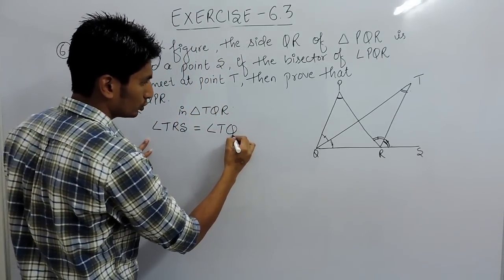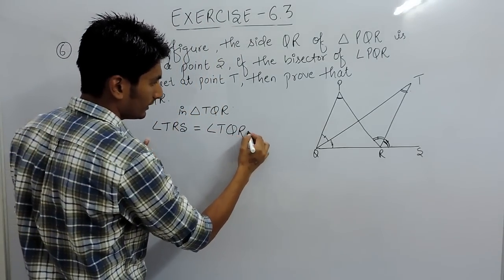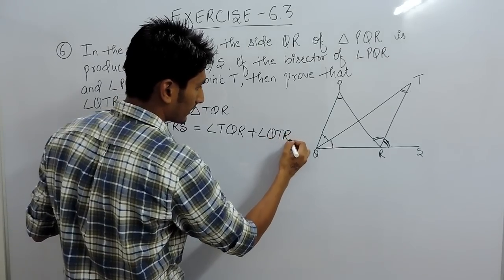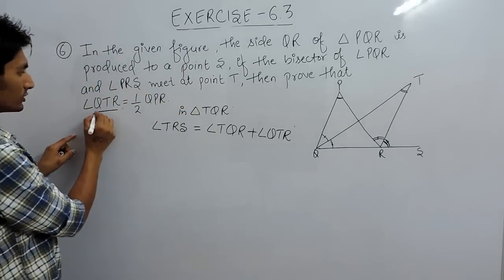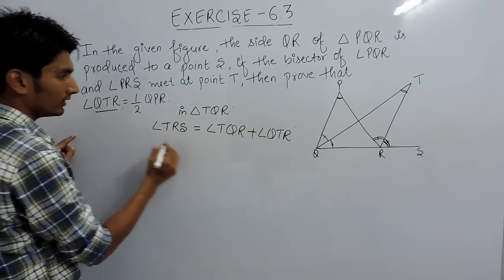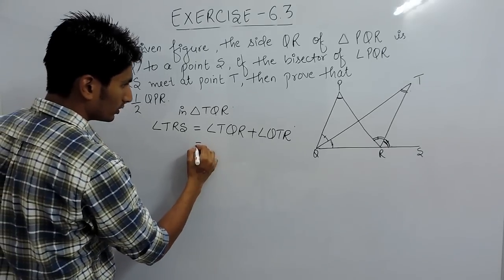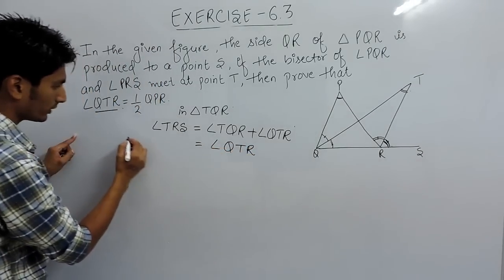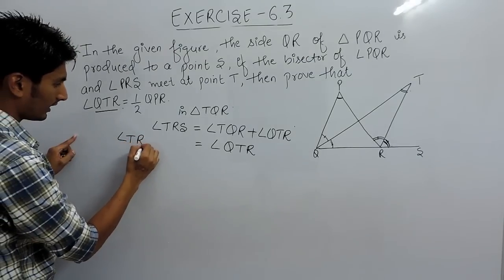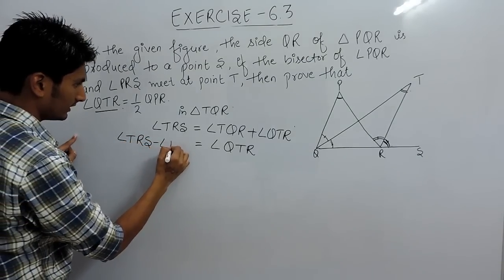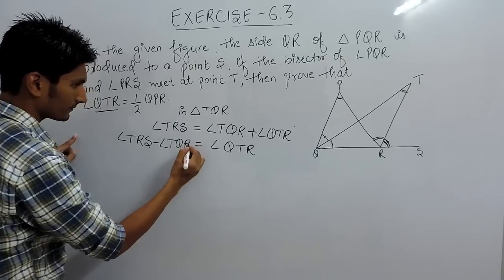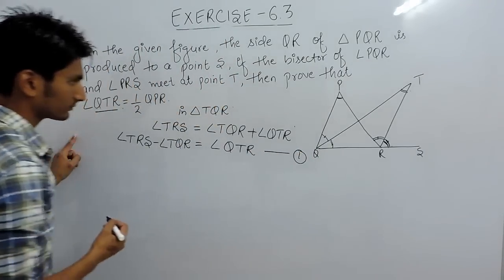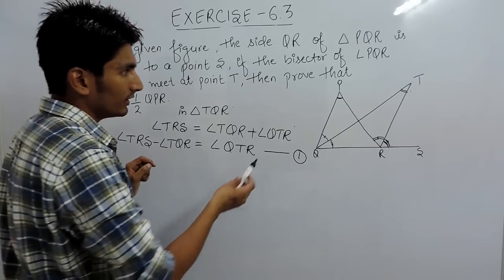So for this exterior angle, the interior opposite angles are angle TQR and angle QTR. Therefore, angle TRS equals angle TQR plus angle QTR. Rearranging, angle QTR must be equal to angle TRS minus angle TQR. This is our first equation.